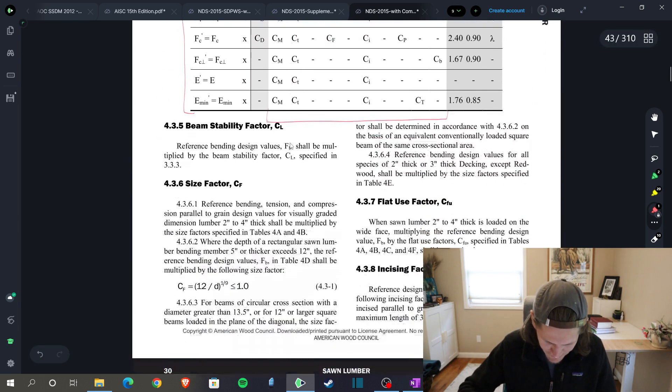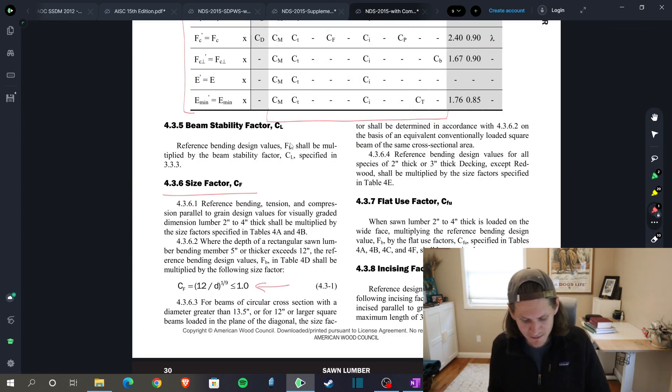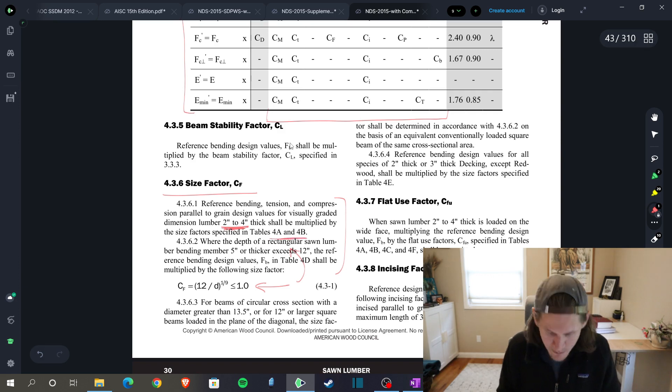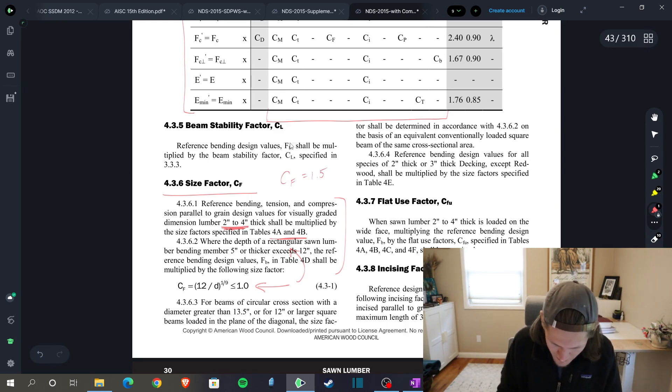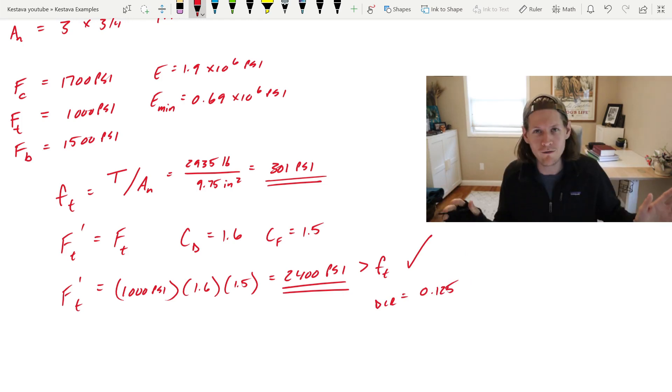And then that just leaves CF. I'll show you where CF is because it's just right here. You might get drawn towards this equation because it's so tempting, so juicy. But you need to read this paragraph up above here. This equation is for dimensional lumber that is larger, but we have two to four inch thick lumber. So you need to go to tables 4A and 4B. But for me, I already know that CF is equal to 1.5. F prime T is equal to 2400 PSI, which is significantly greater than your demand.